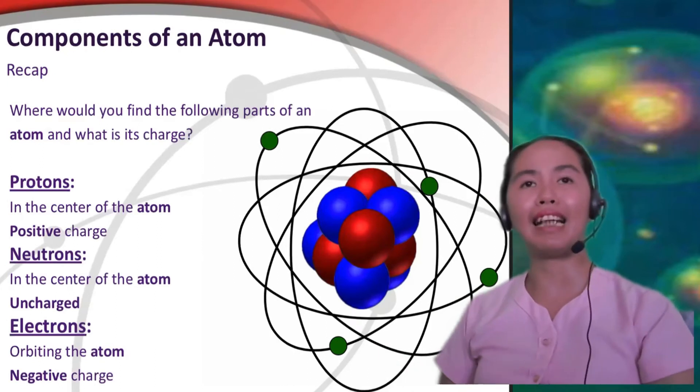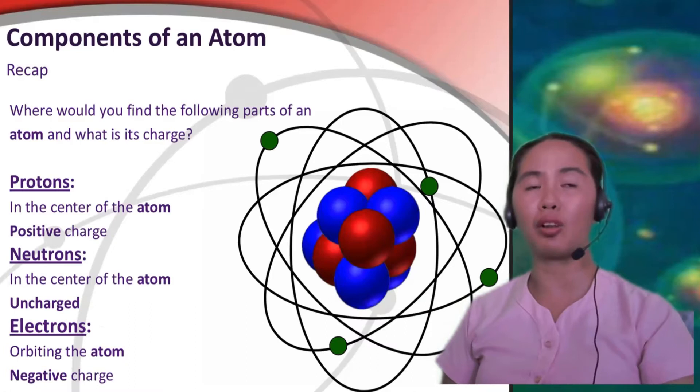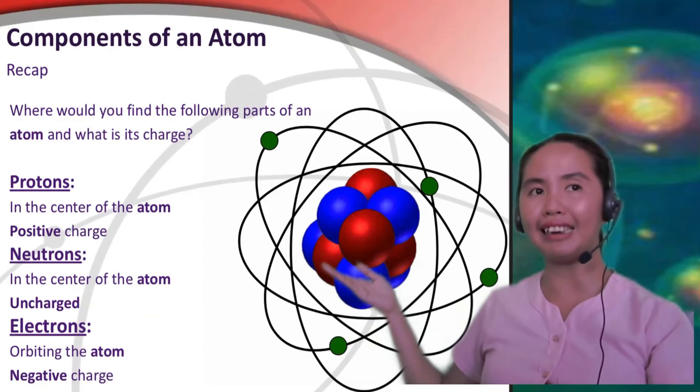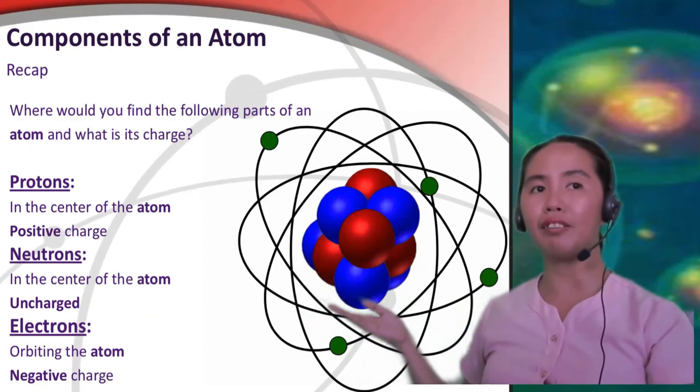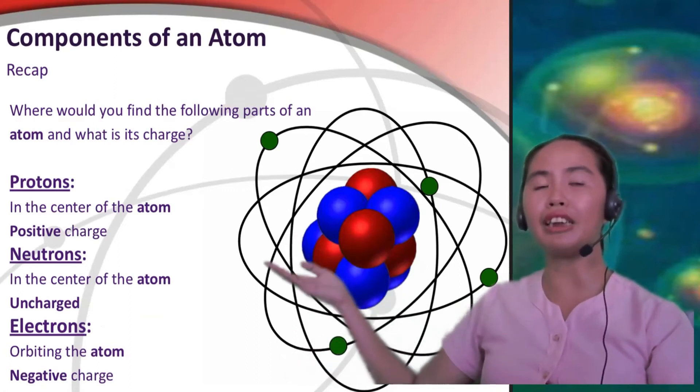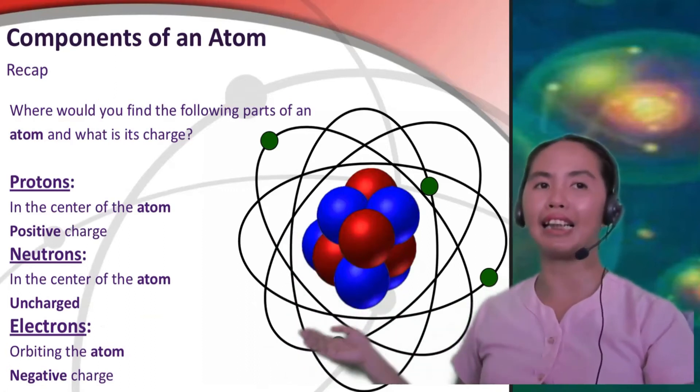So let us just have a recap. Where would you find the following parts of an atom and what is its charge? Protons can be found in the center of the atom. Those are the red circles. Protons and neutrons are also found in the center of the atom, which are the blue circles. And the electrons, which are the green circles, are orbiting the atom.